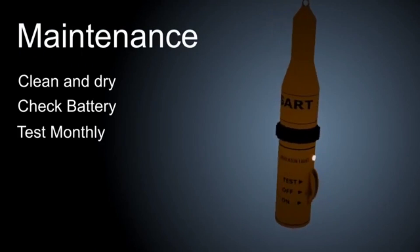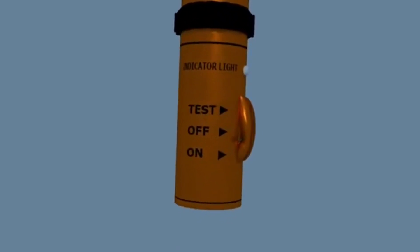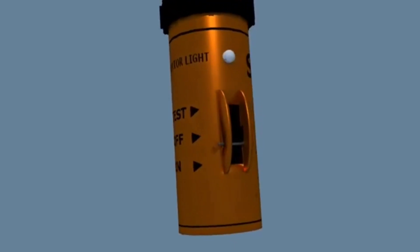Every unit is different, so you do need to check the instructions. On this unit, you can just slide the switch to the test position to temporarily activate it. It will indicate whether the internal test is successful, often with a light.